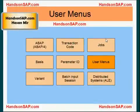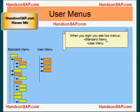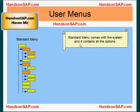We're going to talk about user menus. When you log in, you see two menus in the system: the standard menu and the user menu. The standard menu comes with the system and contains all the options. As you can see, it's a big list, but in reality users use only a few options on a day-to-day basis.